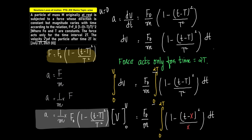Keeping this in mind, we integrate: the left side is ∫dv from 0 to v, and the right side is (F₀/m) × ∫ from 0 to 2T of (1 - (t - T)²/T²) dt. To avoid confusion between capital T and small t, I'll replace capital T with x.